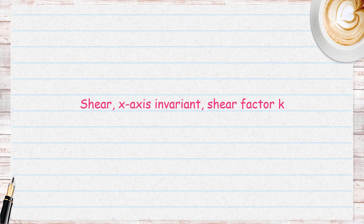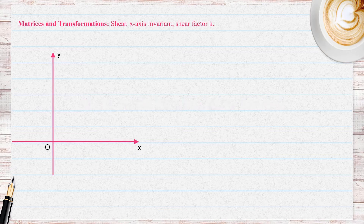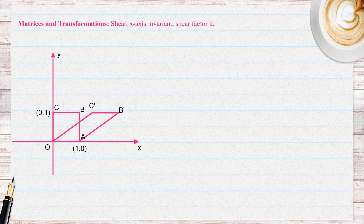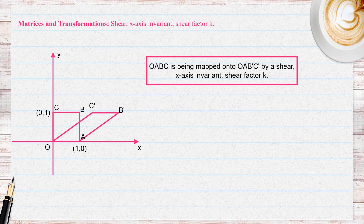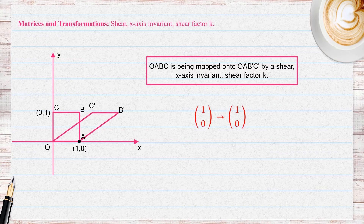Let's talk about a shear transformation parallel to the x-axis with shear factor K. We can consider a unit square OABC being mapped onto the shape O A' B' C' by a shear parallel to the x-axis, meaning the x-axis is the invariant line, with a shear factor of K. The point (1, 0) is mapped onto itself, because it is lying on the invariant line. Points on the invariant line remain unchanged under the transformation.